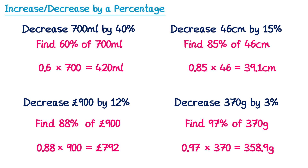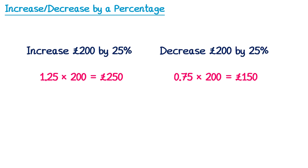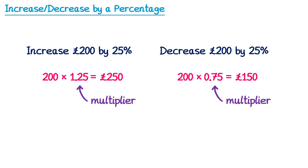There is some language you need to be aware of with this approach. The numbers we multiply by have a special name — we call them multipliers. If you want to increase a number by 25%, you multiply it by 1.25; if you want to decrease it, you multiply it by 0.75. It's more common to write the calculation as the amount multiplied by the multiplier — so 200 × 1.25 rather than 1.25 × 200.